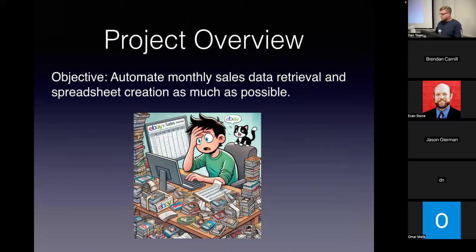The project overview: the objective was to automate as much of my monthly sales data retrieval and spreadsheet creation as possible. For a very long time I was doing this the old-fashioned way, tabbing back and forth between my eBay sales page and a Google Sheet. On top of it being incredibly time consuming, I would also always enter the data in wrong and have to go back and fix it.